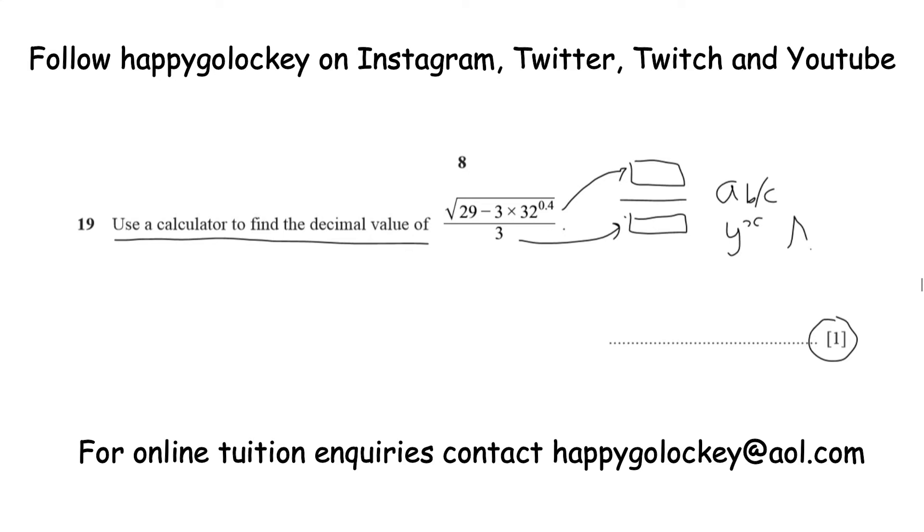Now considering the rules of BIDMAS or BODMAS, depending on how you say it, the first thing we should really be doing, if we can't do it all in one movement, is 32 to the power of 0.4 first. That's the same as saying 32 to the power of 2/5, and any base to a fractional power is the same as saying the nth root of A to the power of M.